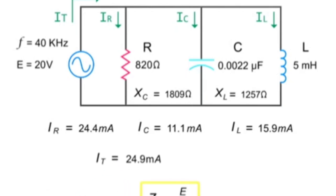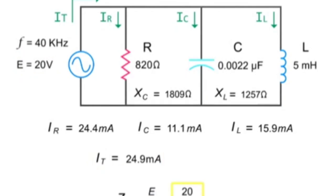Finally, we can calculate the total impedance by dividing the source voltage by the total current, which is 20 volts divided by 24.9 milliamps, or 803 ohms.